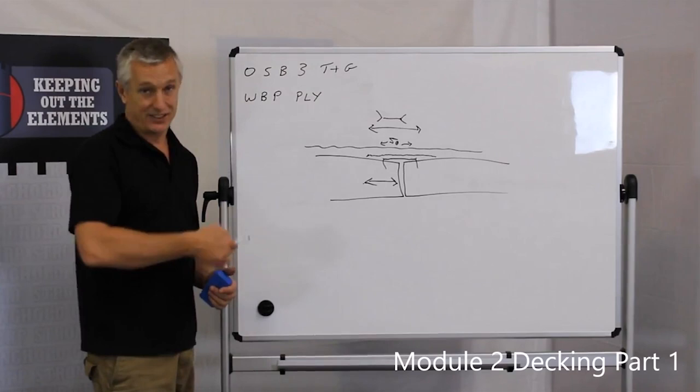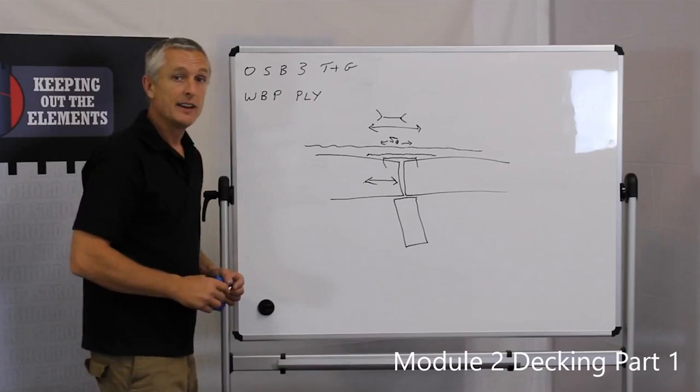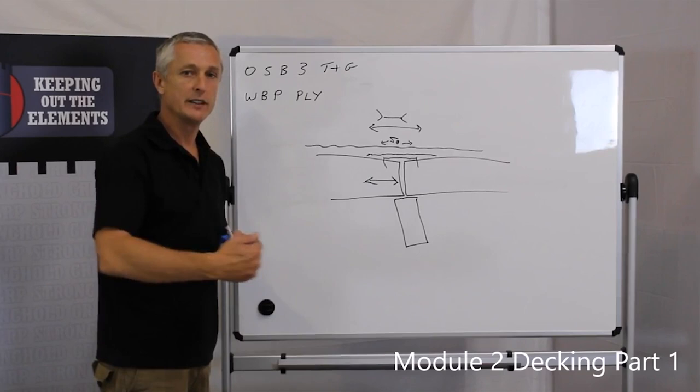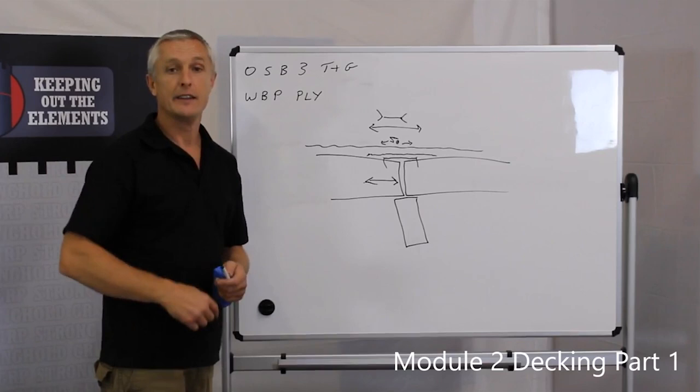One of the reasons we advise against using butt jointed products is in theory, the joints should all be structurally supported with timber underneath. It's quite rare that the carpenter or the builder will put noggins across underneath carrying all of the joints. What happens more often is the board is cut back to the nearest convenient joist and to be honest by the time you've done the work of cutting the boards back to the joist and then reinforcing the joints with fiberglass,